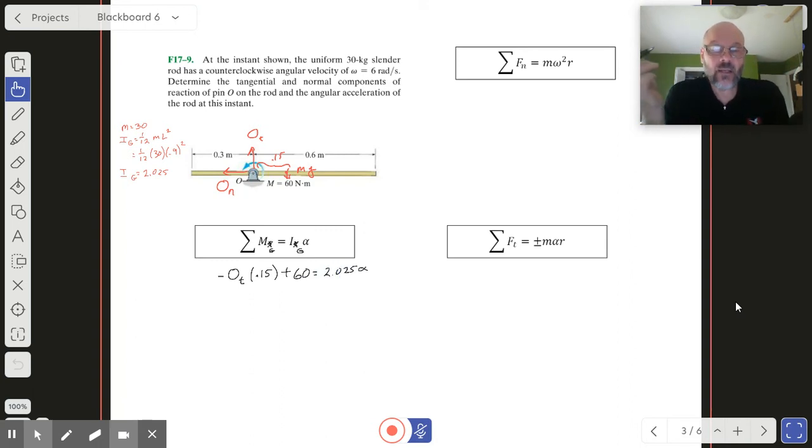I've got two equations and two unknowns. Let me rewrite this to look a little prettier: -0.15·Ot + 60 = 2.025·α. I'm going to put a pin in this and get back to it.